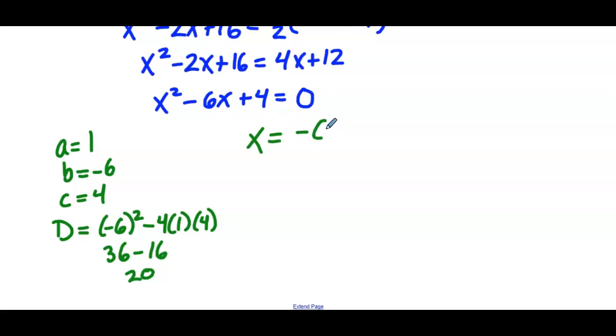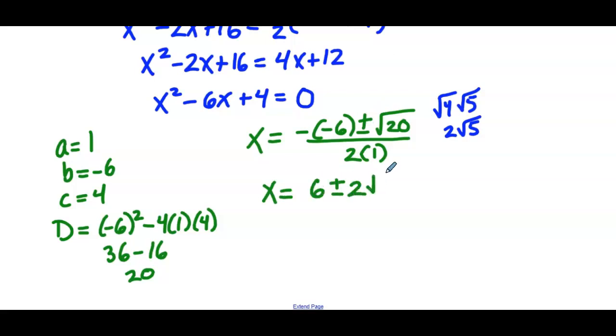So we'll use the quadratic formula. So x equals negative b, so the negation of negative 6, plus or minus the square root of the discriminant, which is 20, all over 2a. So 2 times 1. The square root of 20 can be simplified to be the square root of 4 times the square root of 5, which is 2 times the square root of 5. So simplifying, we have x equals positive 6, plus or minus 2 times the square root of 5 over 2. We can factor out a 2 in the numerator. We're left with 3 plus or minus the square root of 5 over 2. And the 2s simplify.